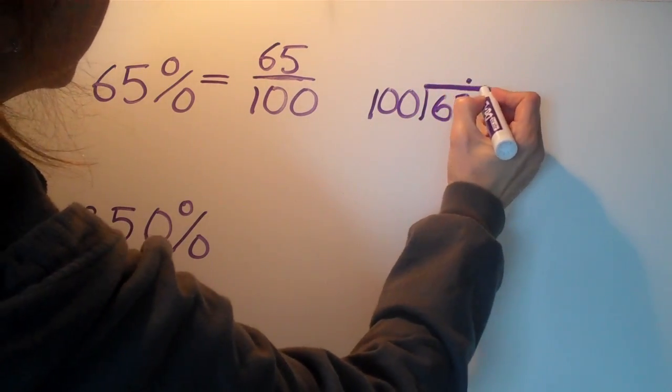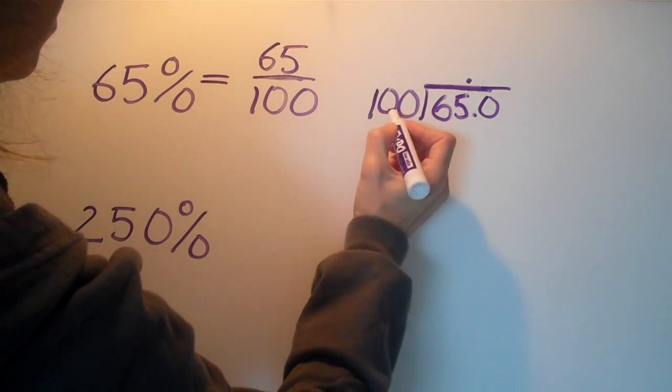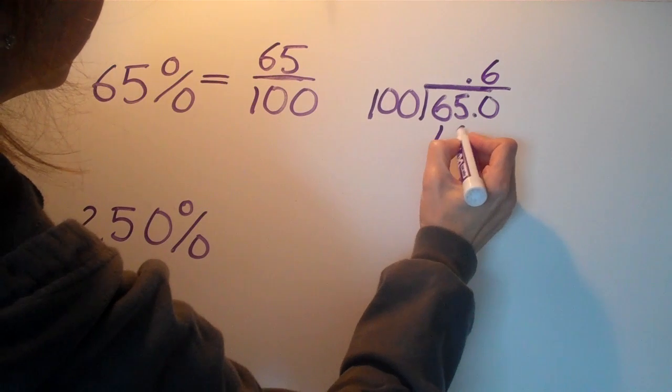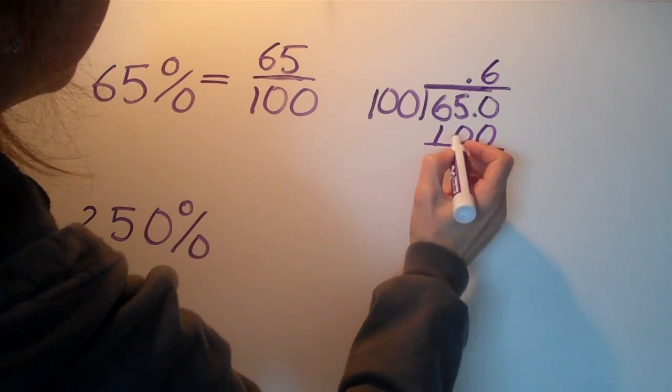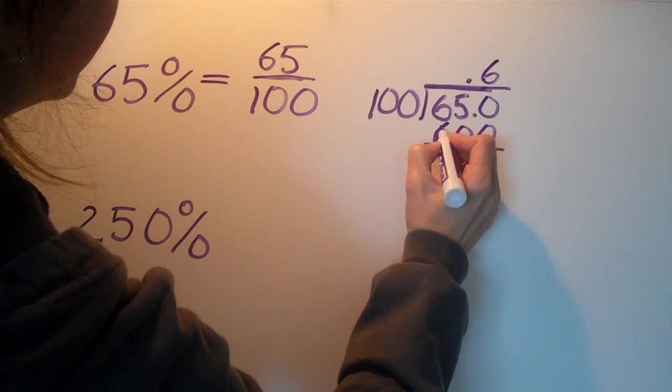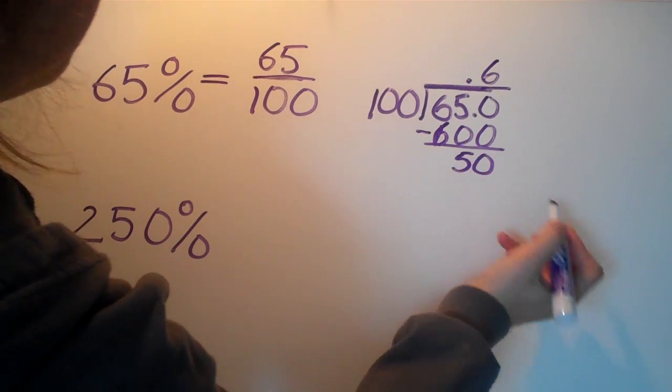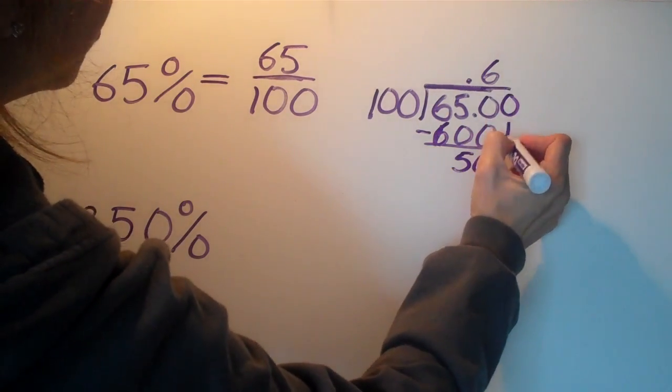Put the decimal up there, add a zero. 100 goes into 650 six times. Six times 100 is 600, do this subtraction, you get 50. Add another zero and bring it down.